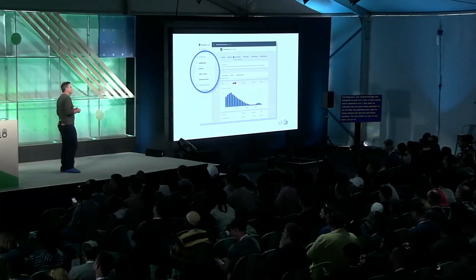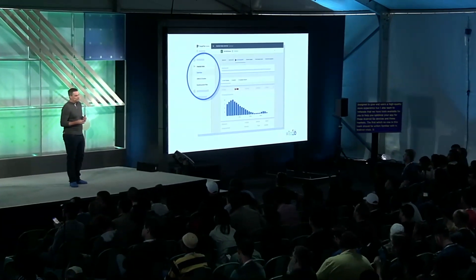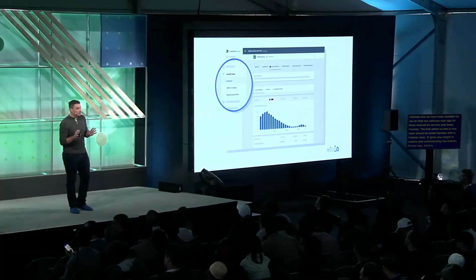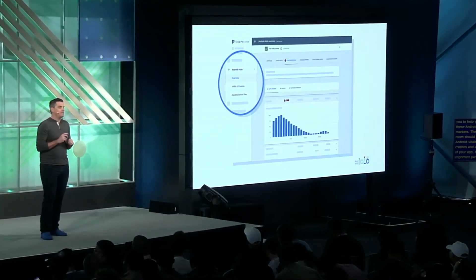This is a great opportunity for the user to get back to Play to download your app. All the features I just walked through are designed to give end users a high-quality store experience. We also have tools available for you to help optimize your app for Android Go devices and these markets. The first, which no one in this room should be unfamiliar with, is Android Vitals. Android Vitals gives you insight into ANRs and crashes and is paramount for understanding the stability of your app and battery. Android Vitals' performance impacts your promotability on the Play Store, especially in the context of search and discovery. We also introduced a flag called isLowRAM that allows you to adjust your app's UX and distribution choices — we want you to optimize for maximum distribution.